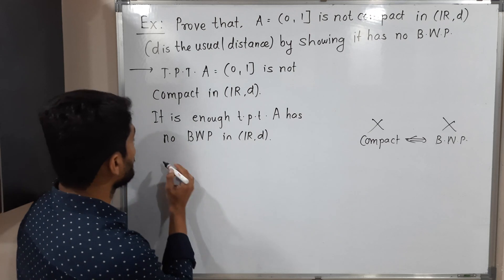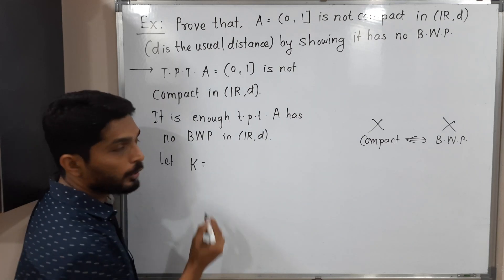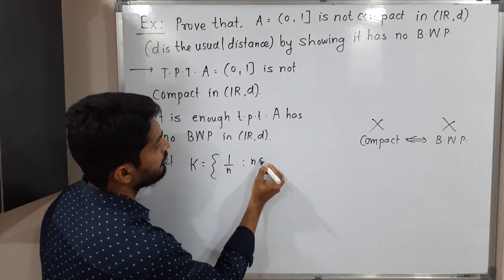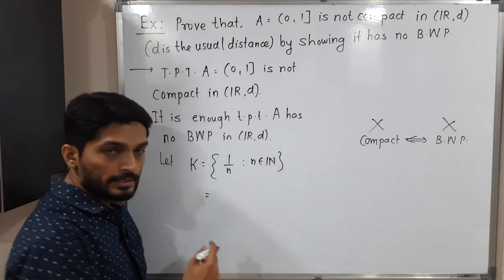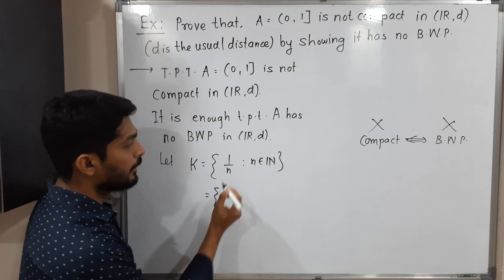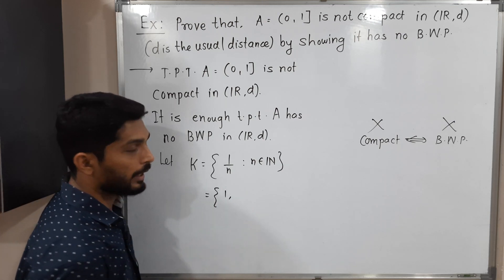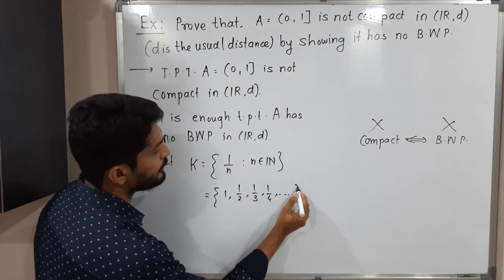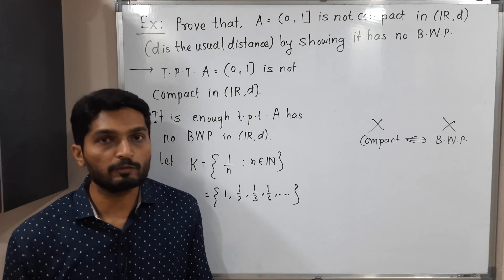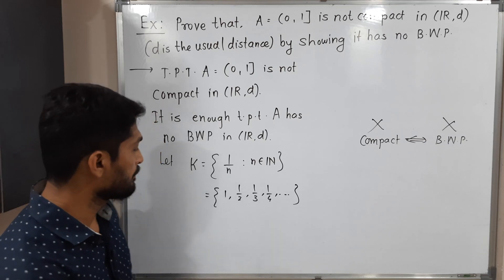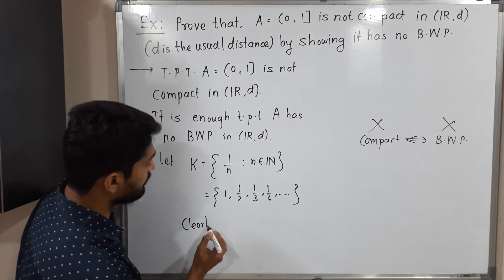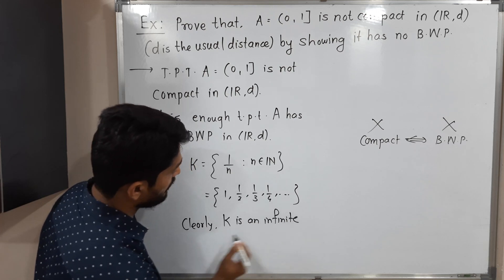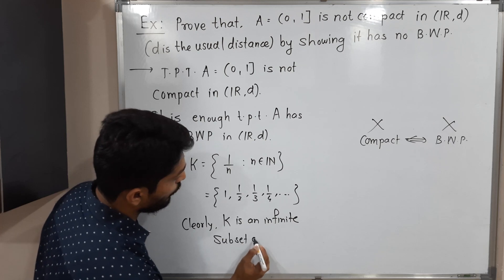Let us take a set K, which is a collection of all real numbers of the form 1/n, where n is a natural number. Expanding it: putting n=1 gives 1, n=2 gives 1/2, n=3 gives 1/3, 1/4, and so on. There are infinitely many terms, so K is an infinite subset of A.